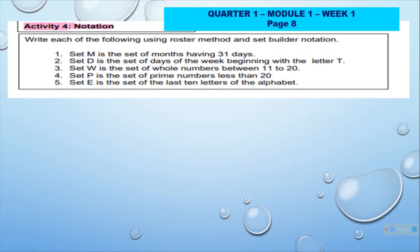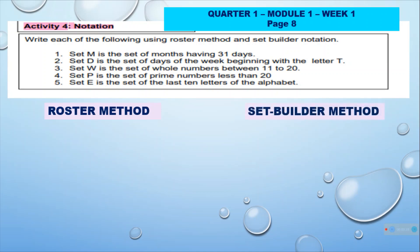In our module, Quarter 1, Module 1, Week 1, page 8, we have Activity Number 4. We call it notation. We have here samples using the verbal describing method, and we will write them using the roster method and the set builder method. There are 5 examples of verbal describing method that we will convert into roster method and set builder method.